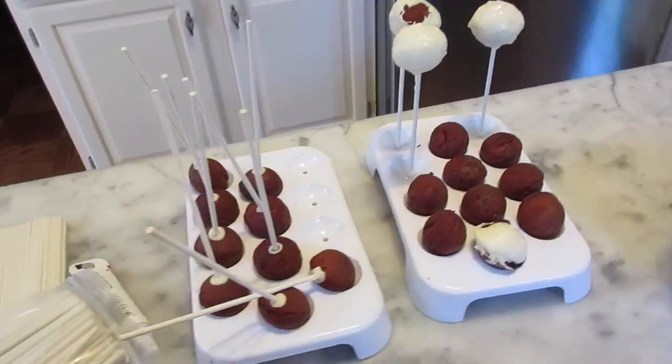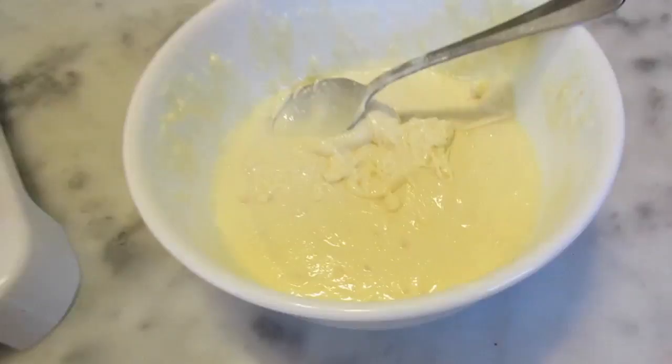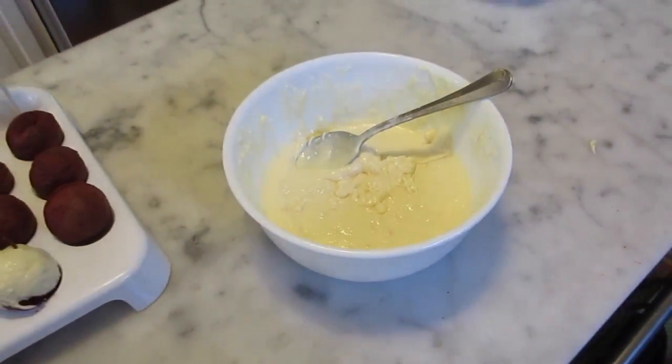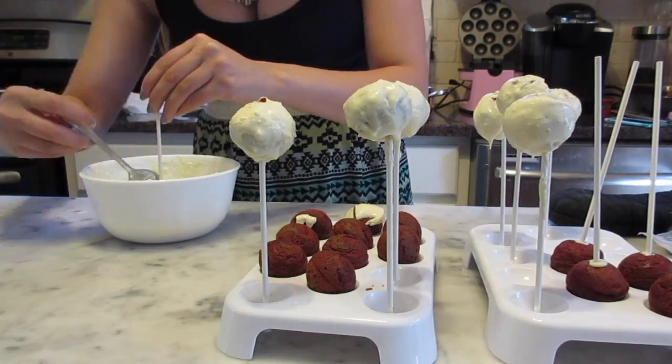The next step I didn't film was taking the cake pop stick, dipping it in melted chocolate, and putting it into the cake pop. Then I put it back in the fridge for 15 minutes to cool off.